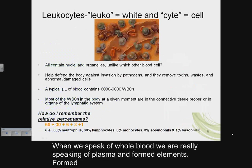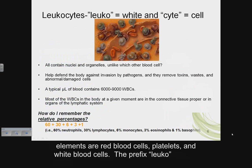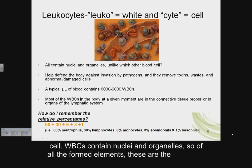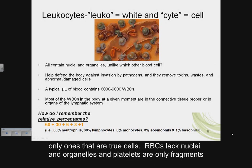When we speak of whole blood we are really speaking of plasma and formed elements. Formed elements are red blood cells, platelets, and white blood cells. The prefix leuko means white and the suffix cyte means cell, so leukocyte means white blood cell. White blood cells contain nuclei and organelles, so of all the formed elements these are the only ones that are true cells.